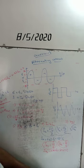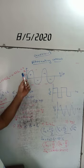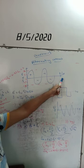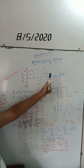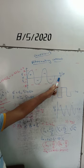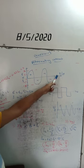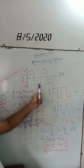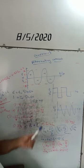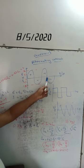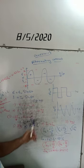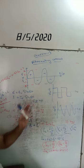The graph plotted of alternating current or EMF against time or angular rotation is called an AC waveform. This is the sinusoidal AC waveform, this is the square AC waveform, and this is the sawtooth waveform. Usually we consider the sinusoidal AC waveform.